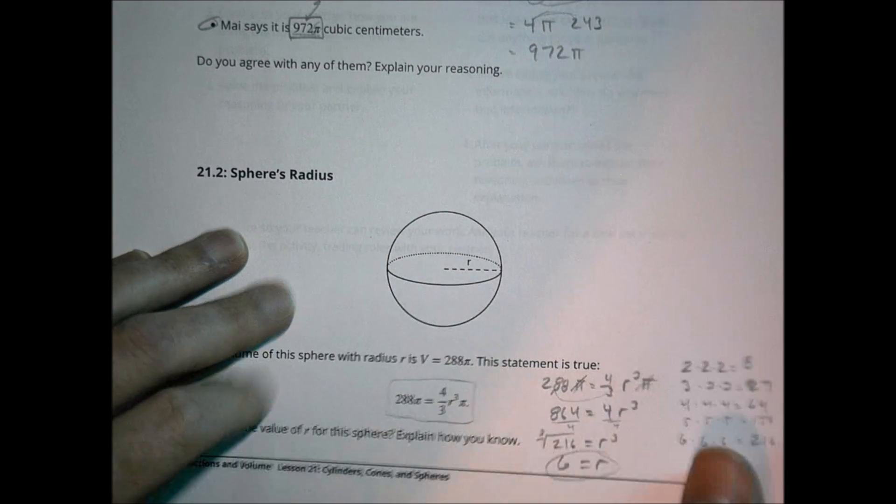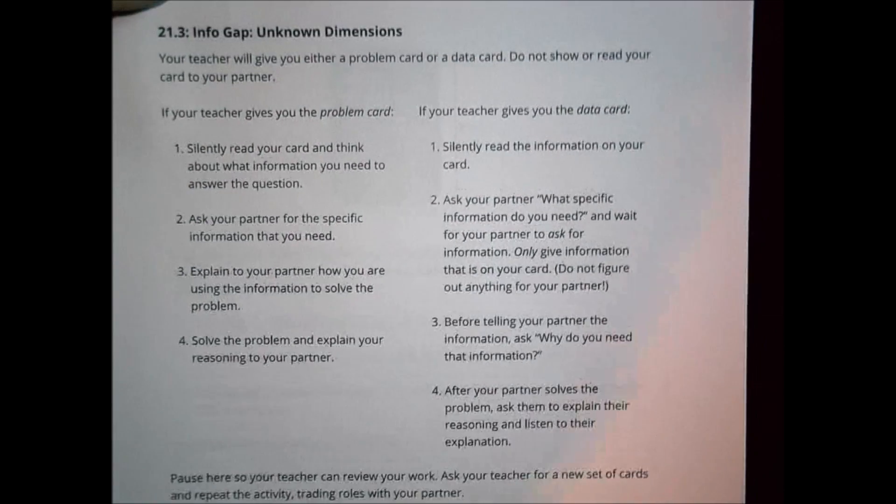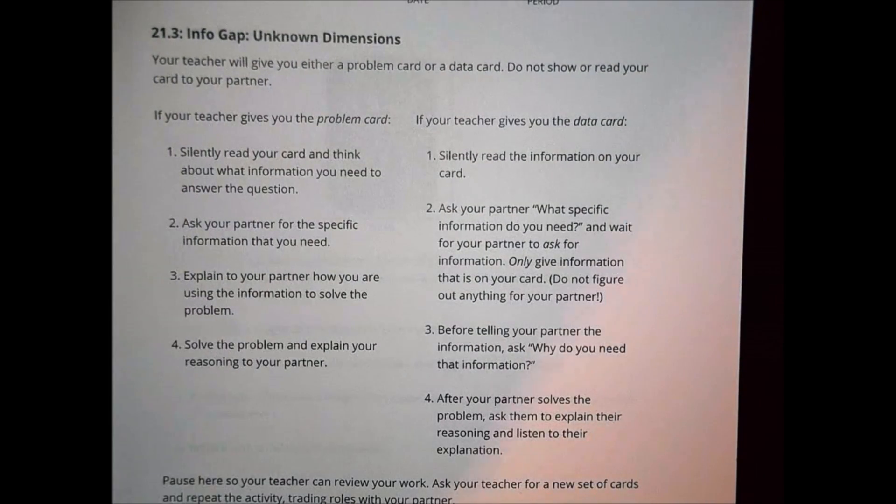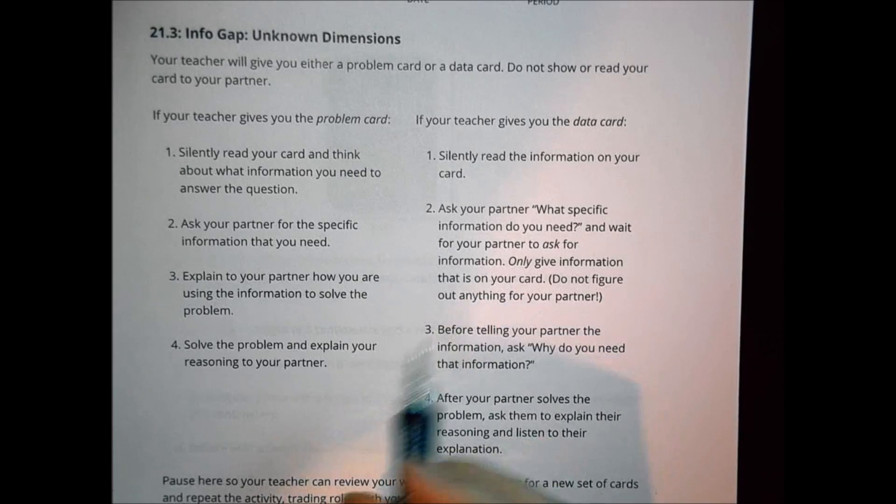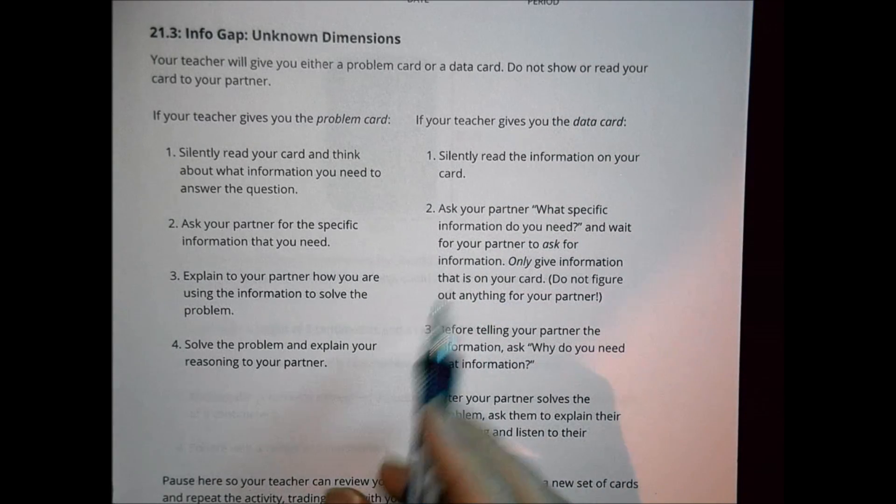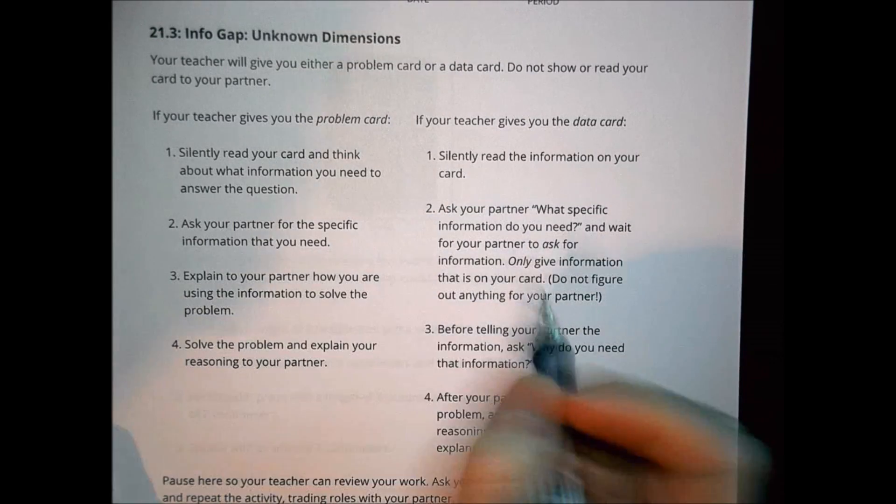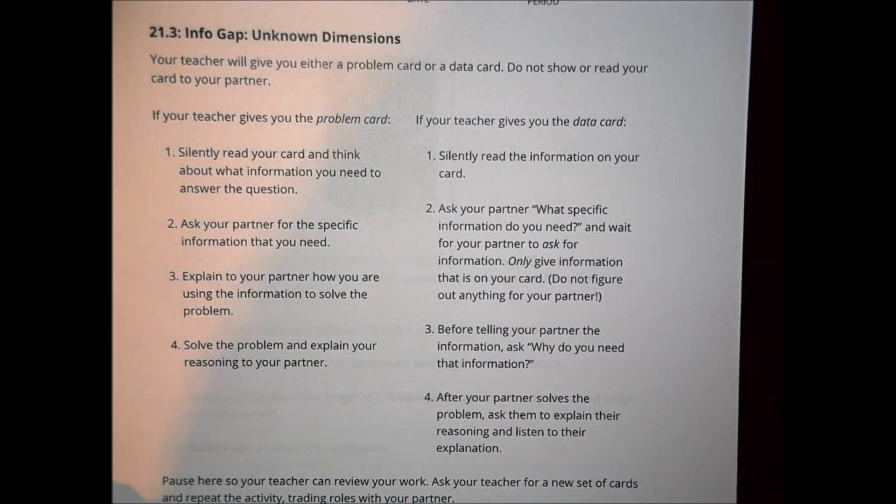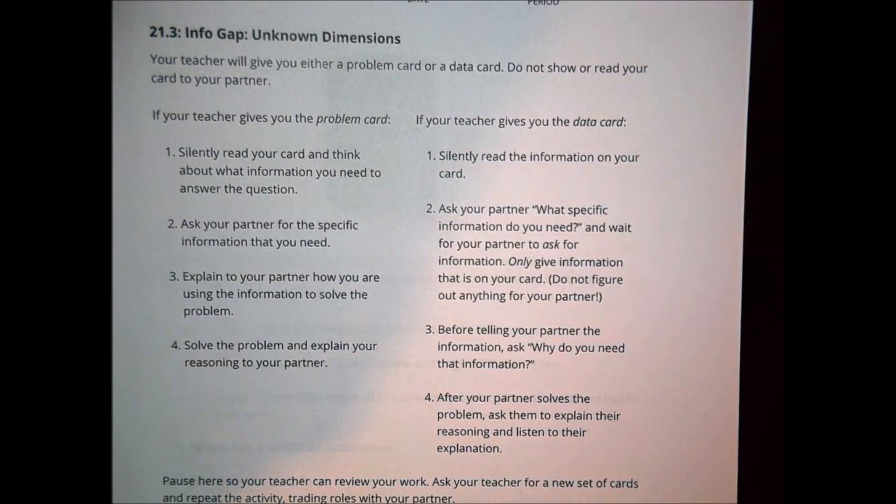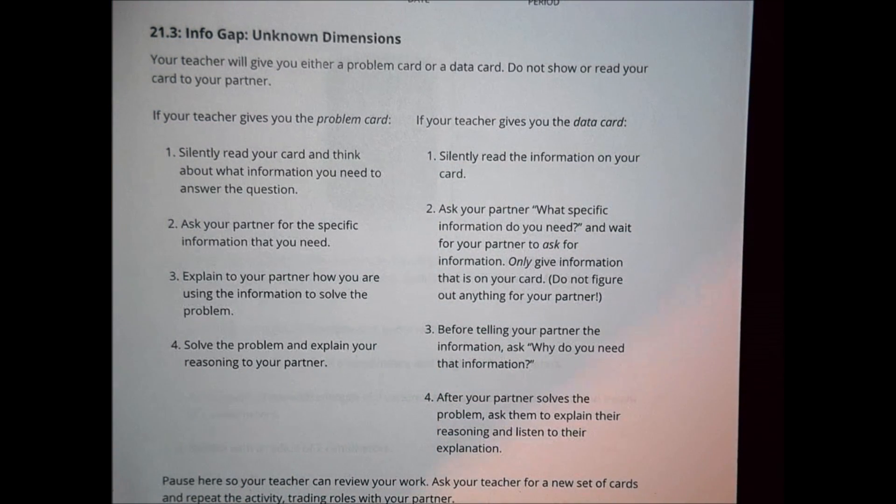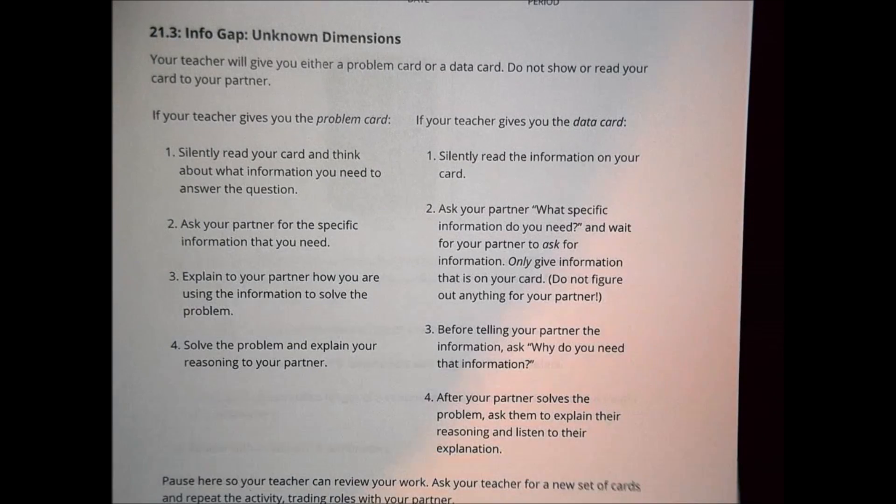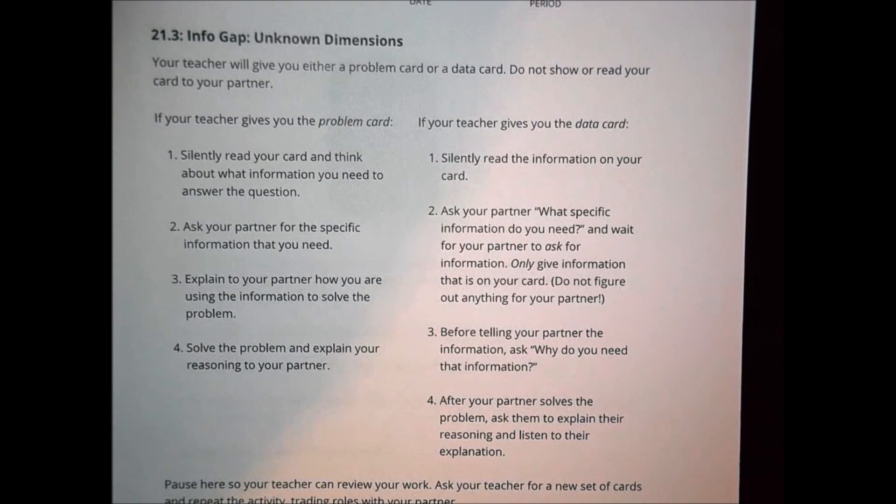And the next activity we did in class today was another info gap activity where you and a partner had some problem cards and data cards, and you worked together with your class to talk about the information and to work towards solving that problem there by asking your partner for specific information. And then just being very clear in what things you're looking for to solve those different kinds of problems there. So if you're doing that in the class, then take a moment to do that and pause the video and then come back to the next activity once you're ready to move on.